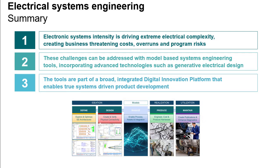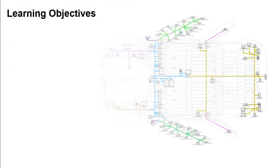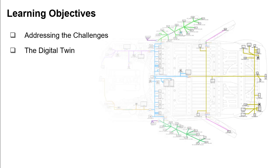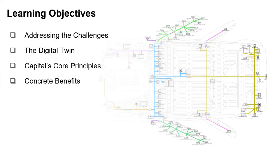In summary, electronic systems intensity is driving extreme electrical complexity, which creates business-threatening costs, overruns, and program risks. These challenges can be addressed with model-based systems engineering tools that incorporate advanced technologies such as generative electrical design. The tools are part of a broad, integrated digital innovation platform that enables true systems-driven product development. In this lesson, we've described important industry challenges and how we address them through a digital twin, Capital's core principles, and examples from real companies.